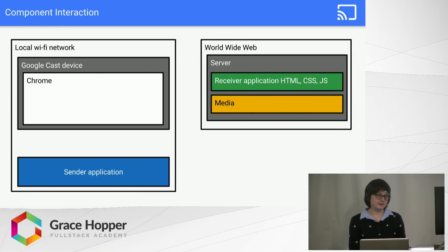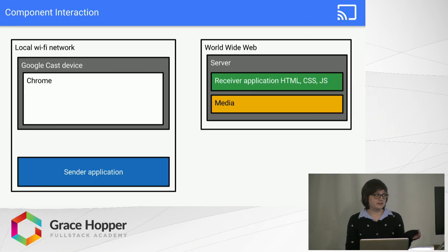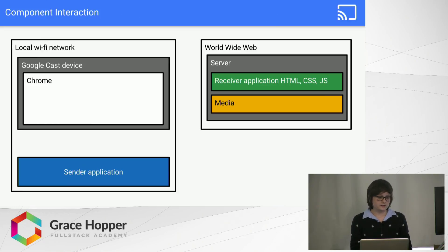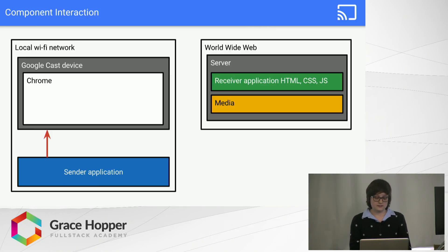Here is a more technical diagram of how all of this works and how they communicate, because that will be the focus of the rest of my talk. On the left, you have your Wi-Fi network with your Chromecast and then your phone or laptop. On the right is the internet with the server that has the receiver application you want and the media — for example, the Netflix server. First, the sender application will send a session request to your Chromecast device, and associated with that session is an application ID. This application ID has a URL associated with it, and that URL is where the Chromecast knows to send a request to get the receiver application.